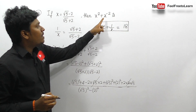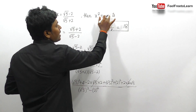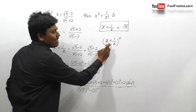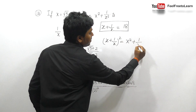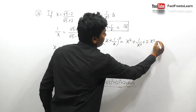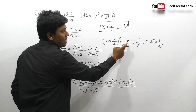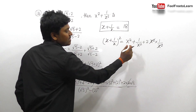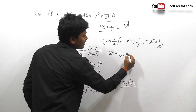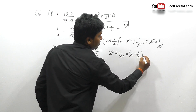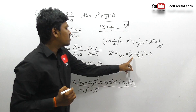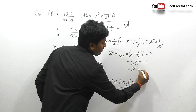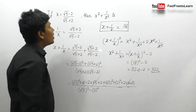Using the formula (x + 1/x)² = x² + 1/x² + 2, we get x² + 1/x² = (x + 1/x)² - 2. We already know x + 1/x = 18, so x² + 1/x² = 18² - 2 = 324 - 2 = 322. The answer for question number 14 is 322.